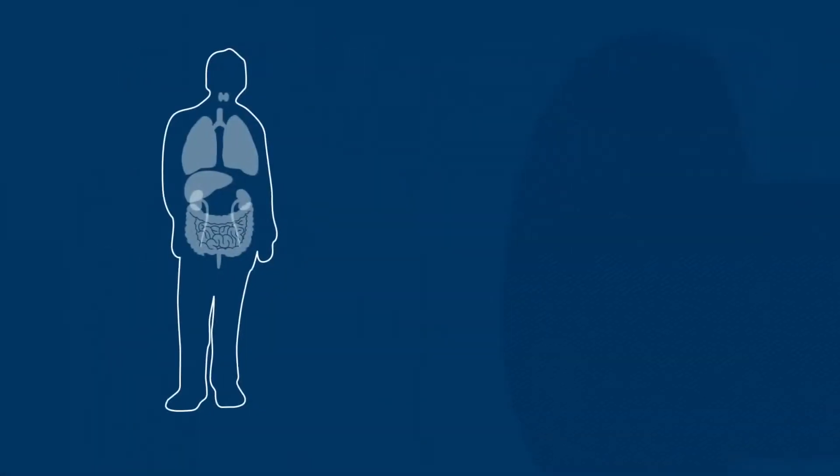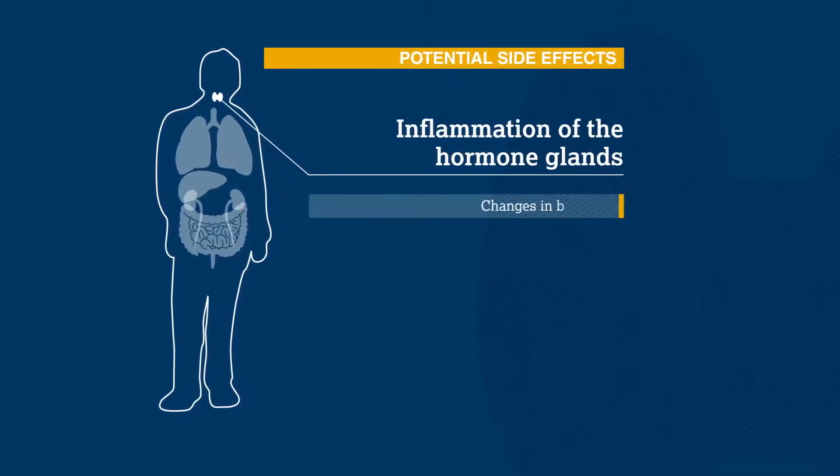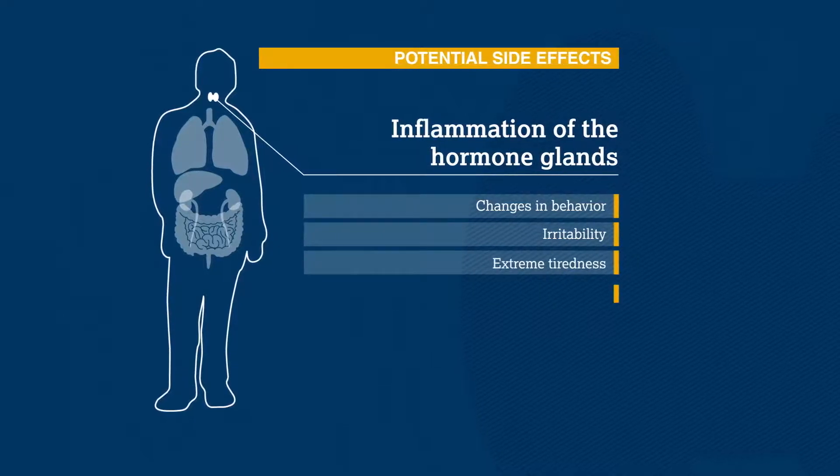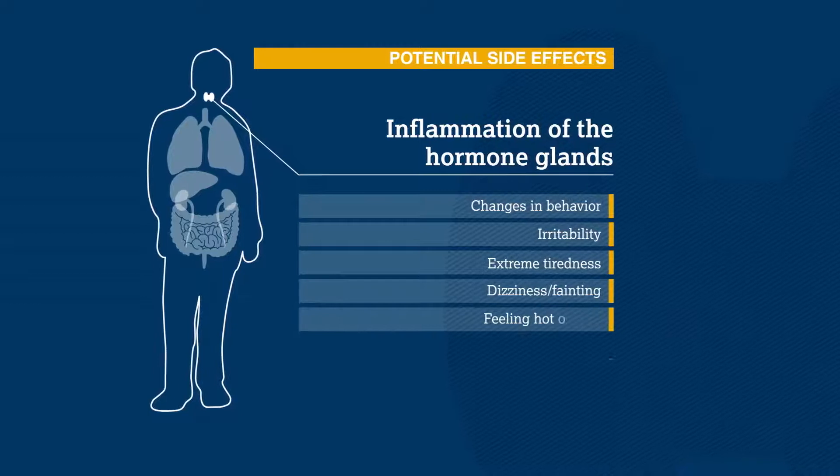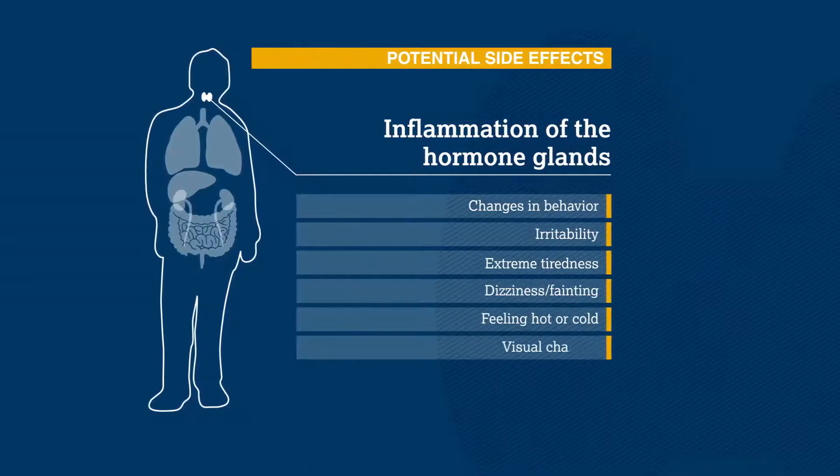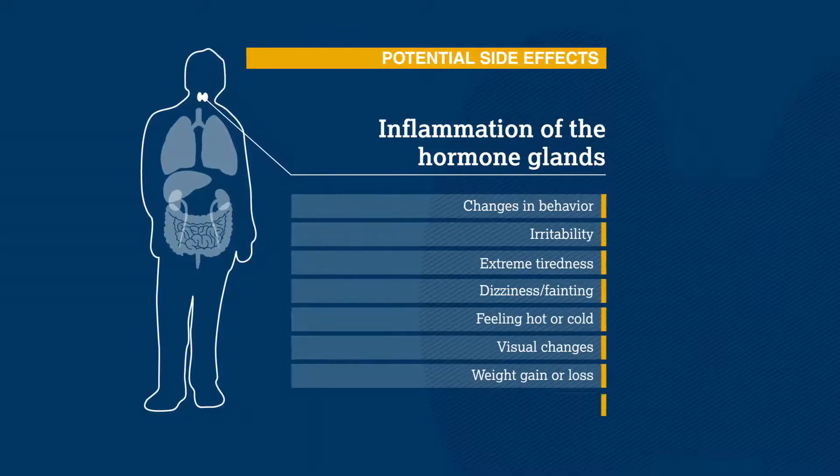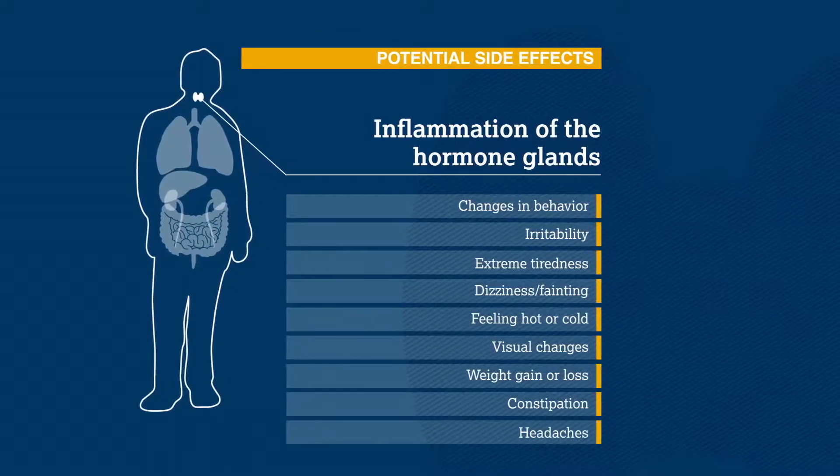Immunotherapy may also have an effect on a patient's hormones, which can cause unexpected changes in behavior, being really irritable or tired all the time, dizziness or fainting, feeling hot or cold, or changes in vision. Others might notice sudden weight changes, constipation, or unusual headaches that last for a long time.